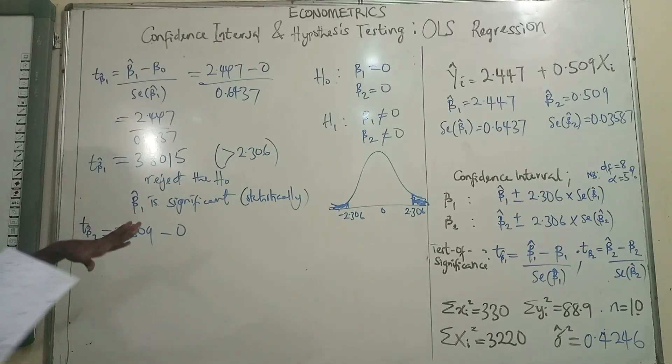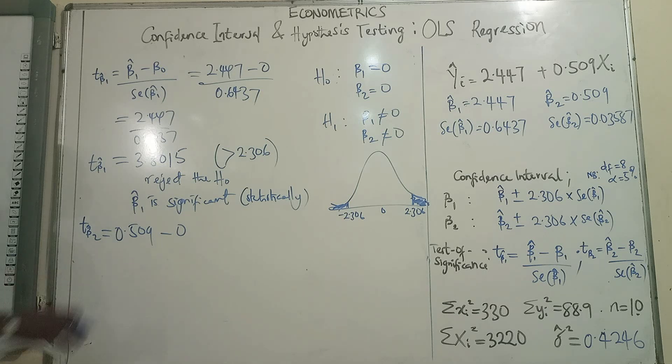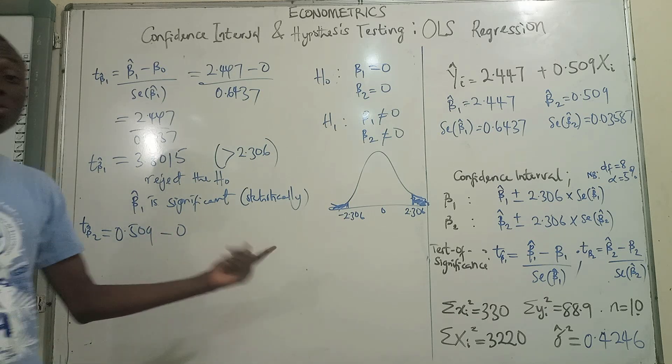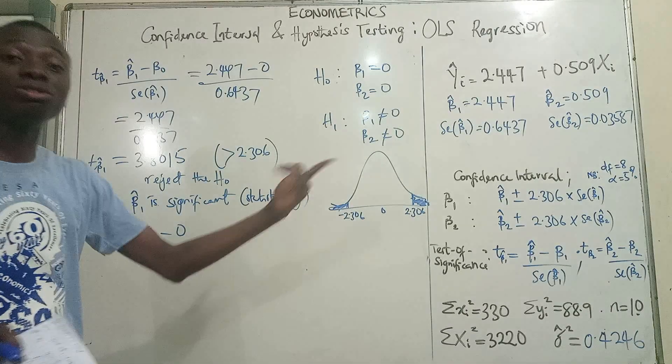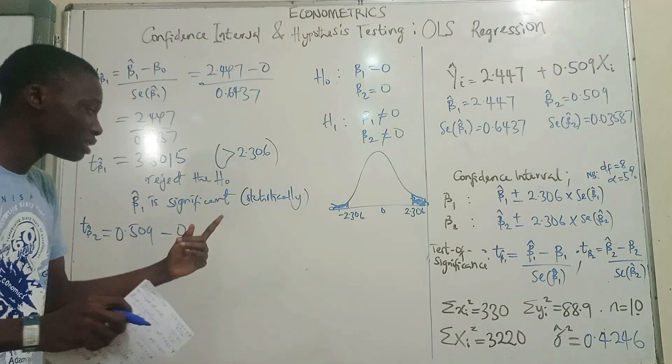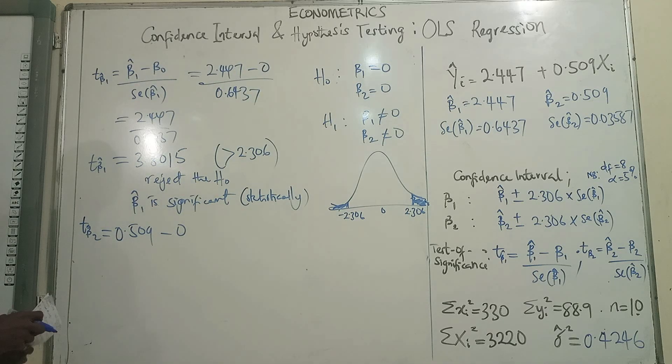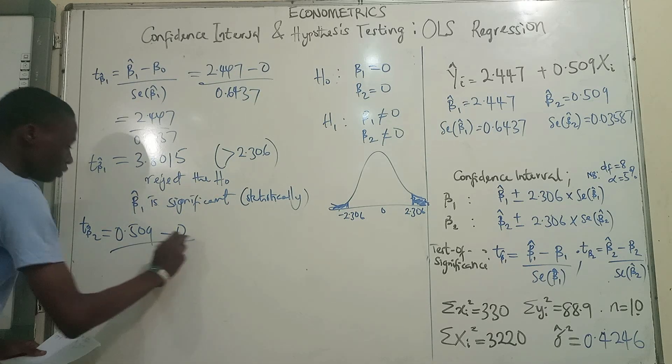Beta 2 is 0. It's like saying that there is no relationship between consumption and income. So if we accept or we do not reject this hypothesis, it means there is no relationship. But if we reject it, it means it is significant and there is a relationship. So let's see what our answer would be.